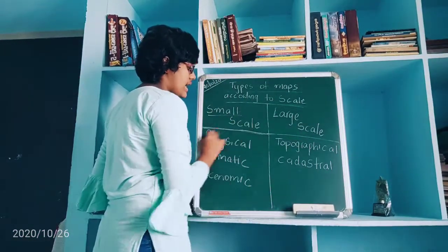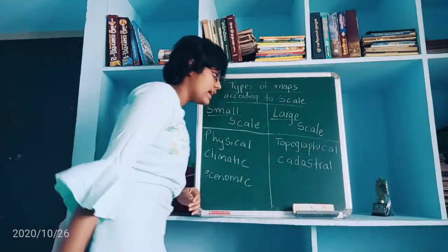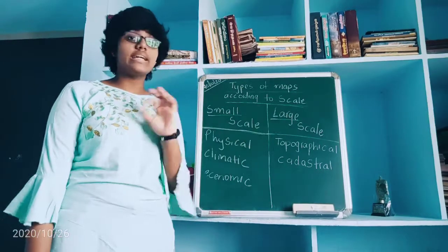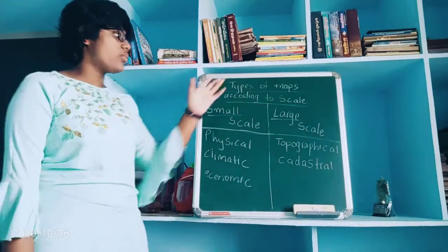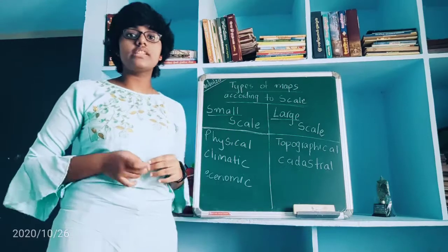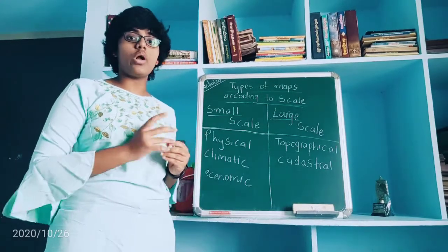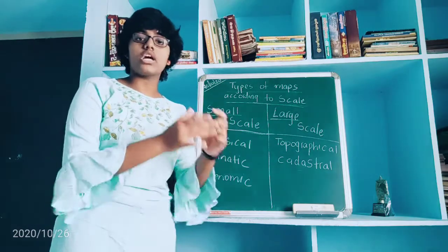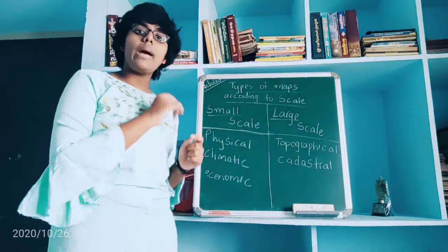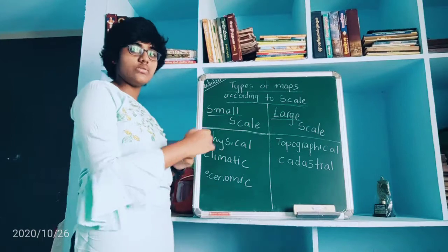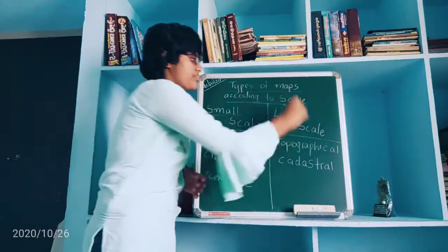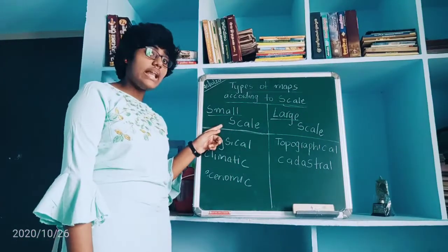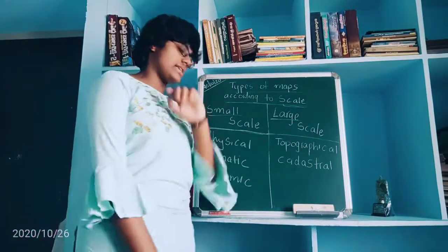Now, what are small scale and large scale? Scale in geographical features represents the ground distance to the map distance used to measure — that is known as a scale. According to this scale, there are two types: small scale and large scale.